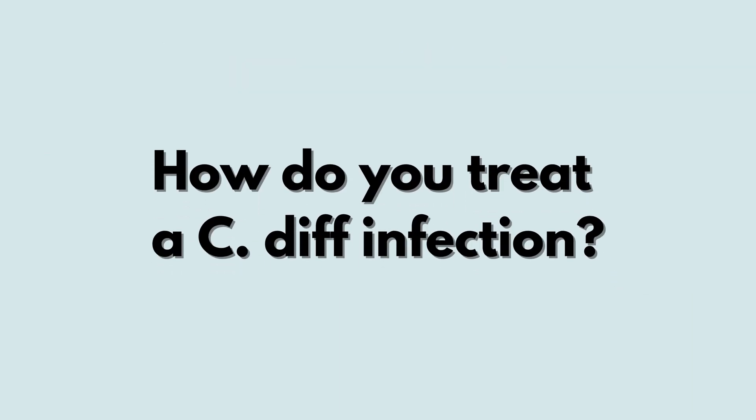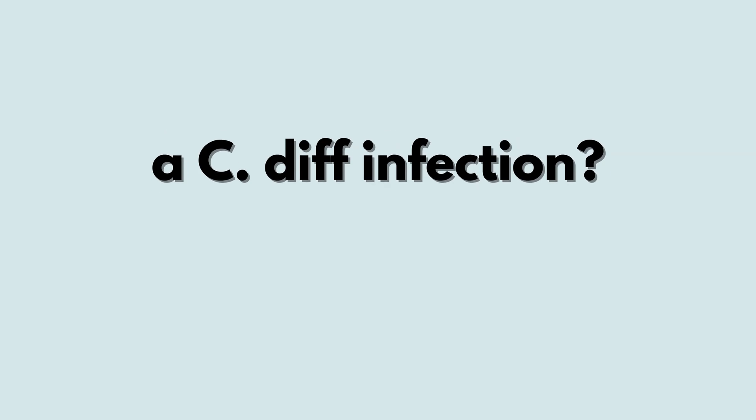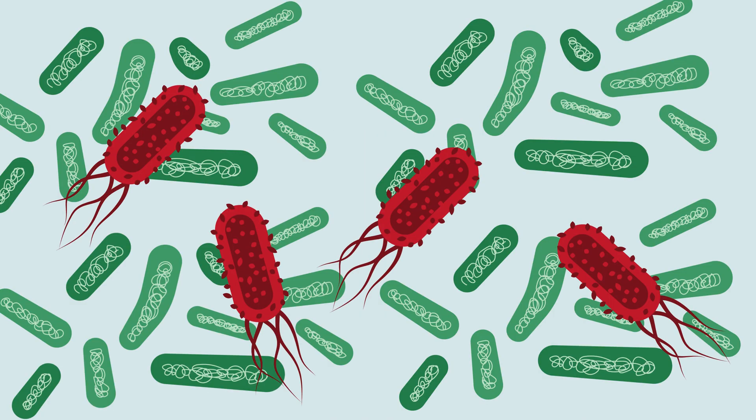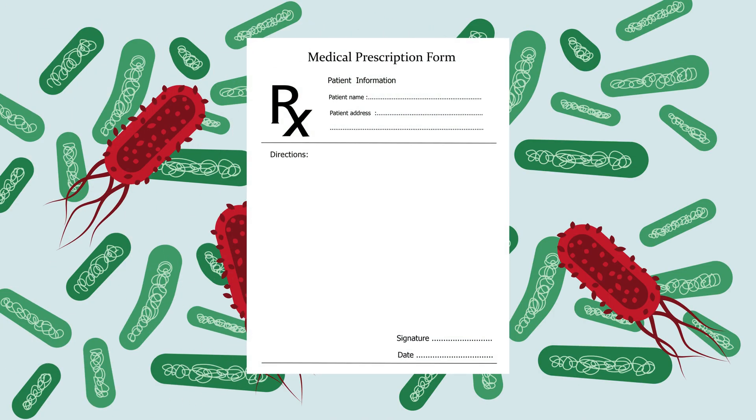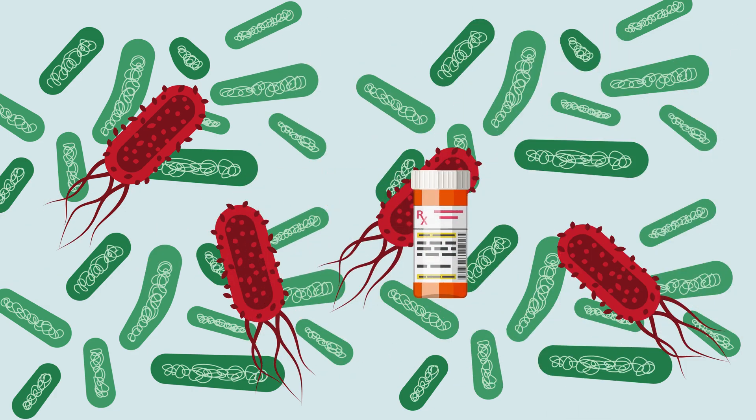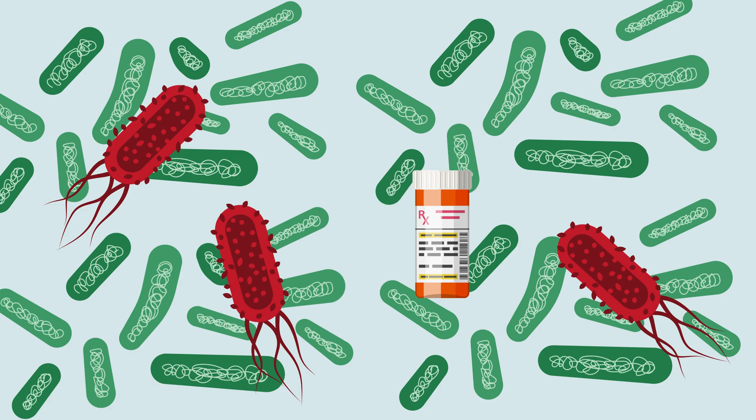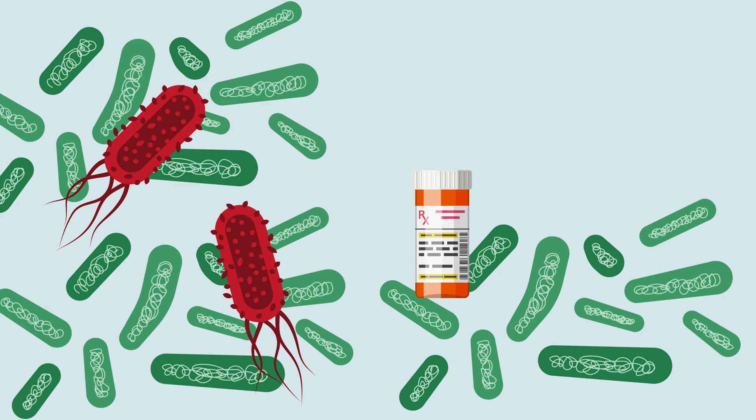So, how do you treat a C. diff infection? Ironically, the way we treat C. diff infection is by using another antibiotic, such as vancomycin. These antibiotics will kill some C. diff bacteria, but they will also kill good bacteria at the same time.